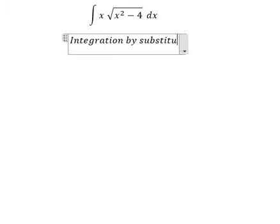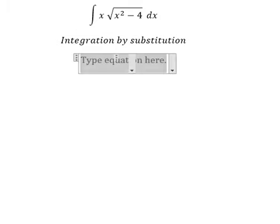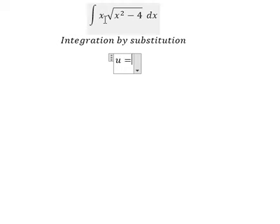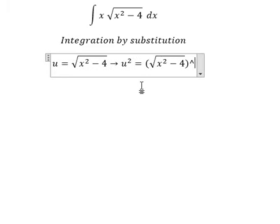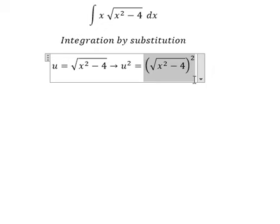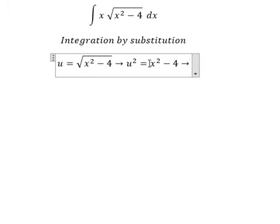So I will put u equals to this one. Later, we put the square for both sides to cancel the square root, and that is about x squared minus number four. Later, we need to do first derivative for both sides.